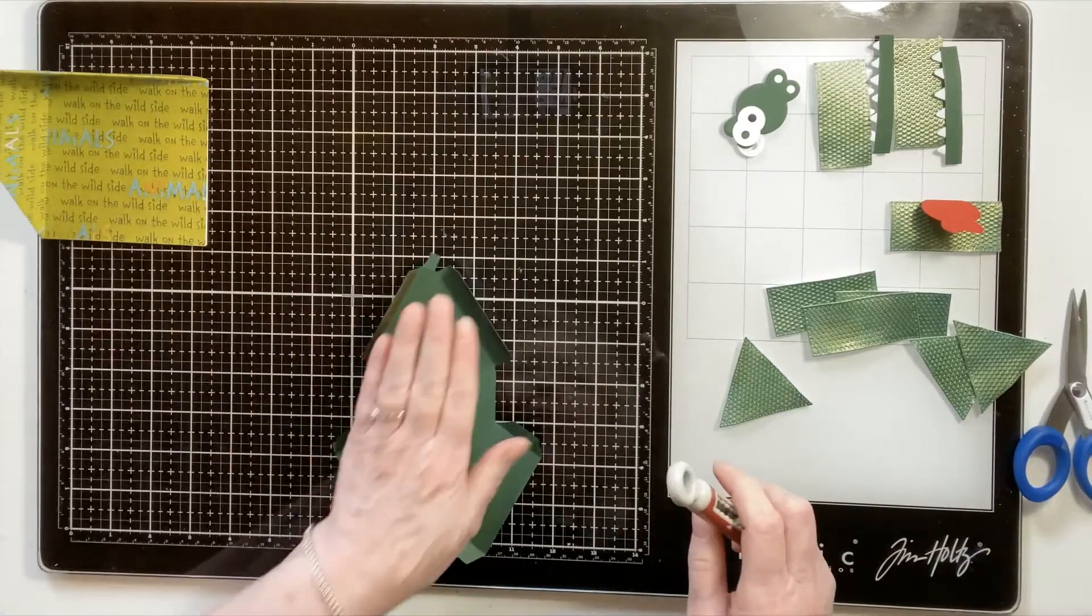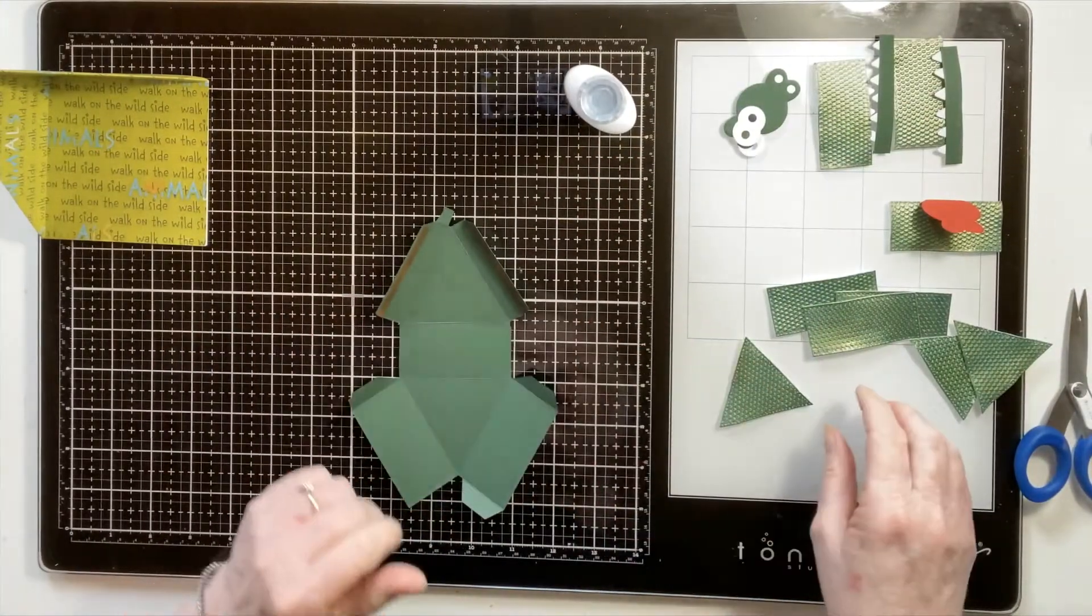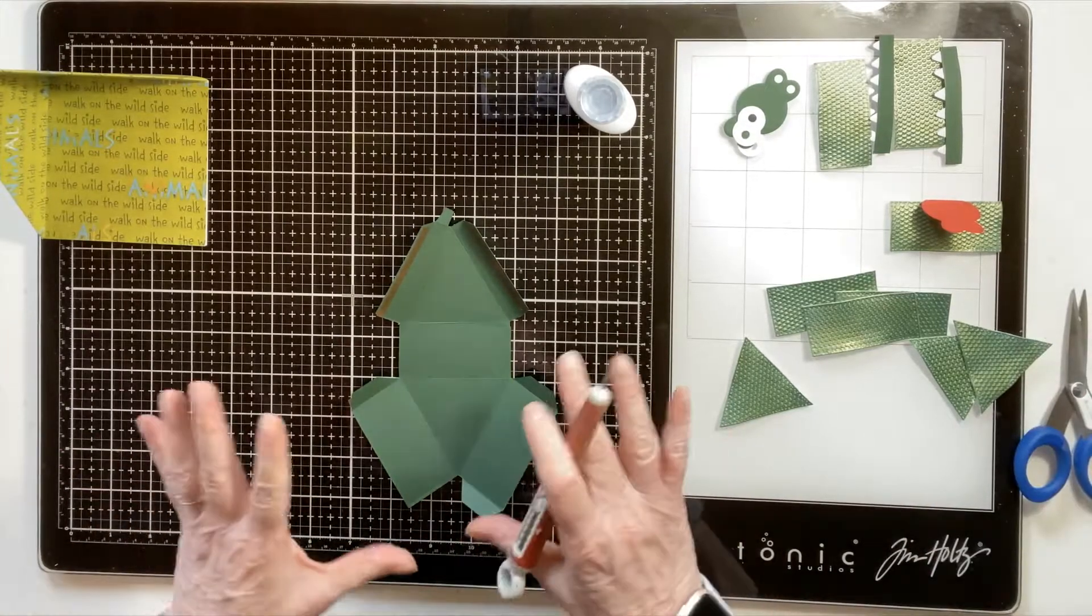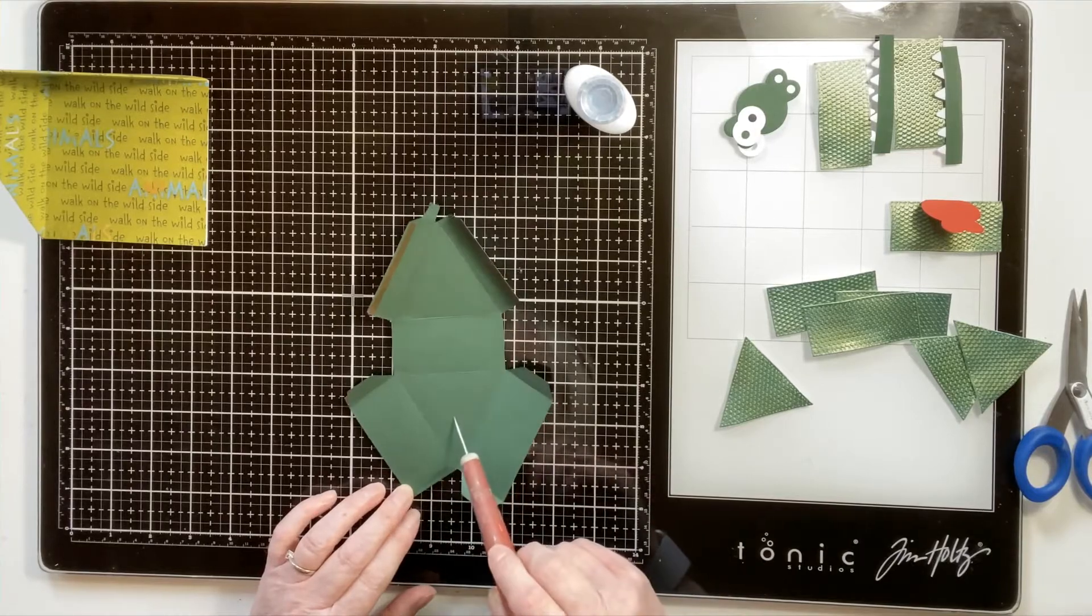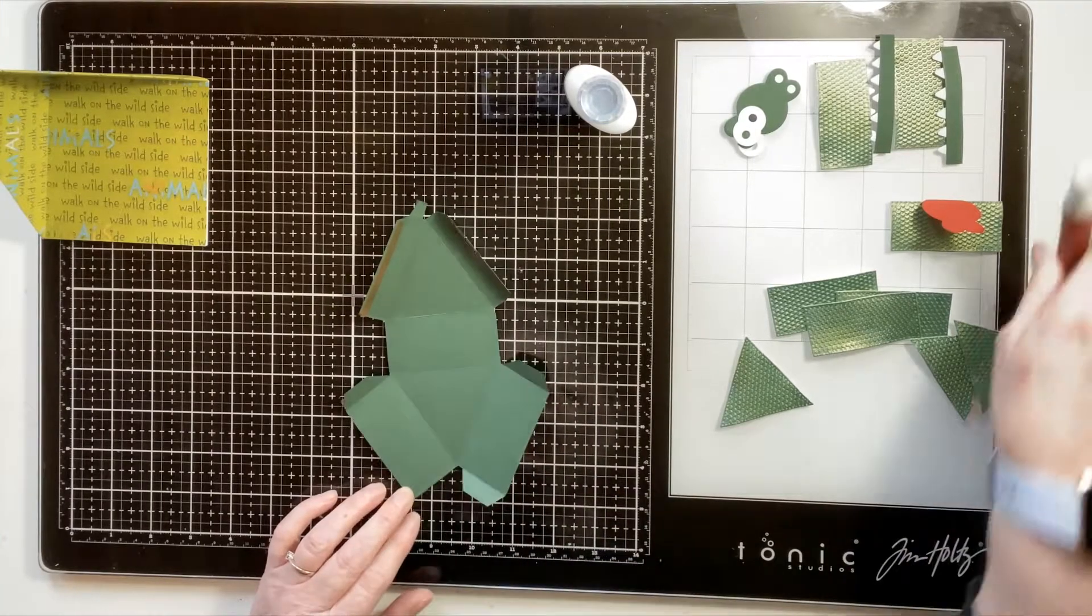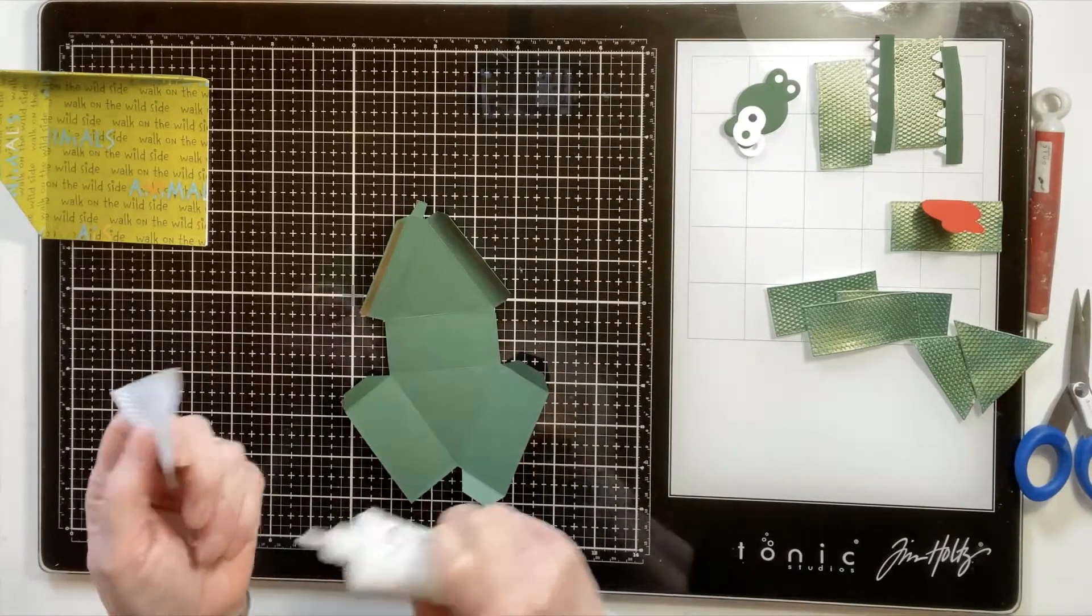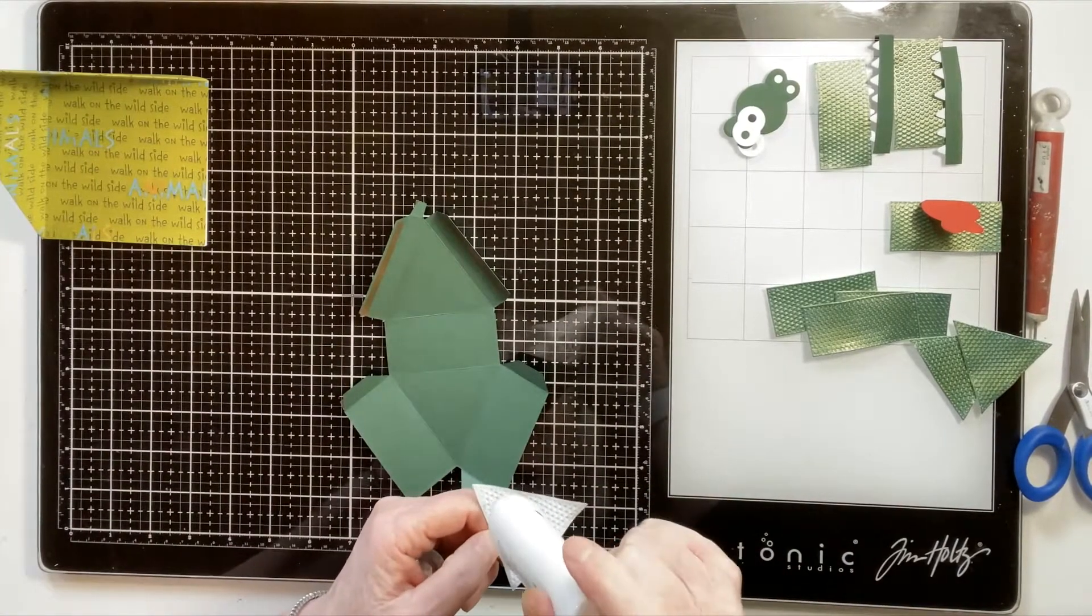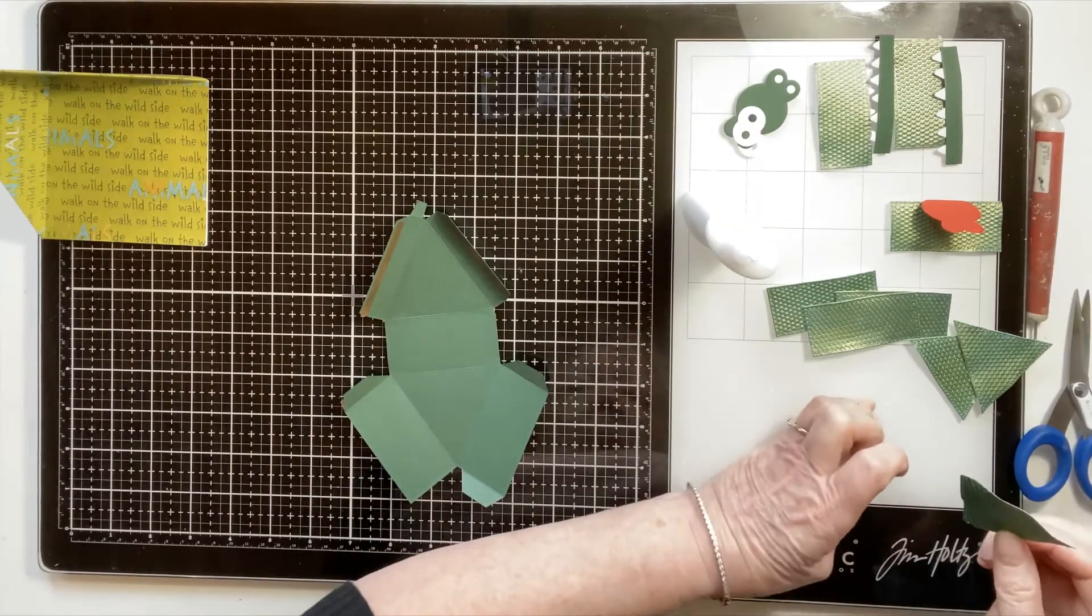Okay, so before we actually stick it together, we're going to decorate the inside as much as we possibly can. Some parts of it we can't, but we can do that piece, that piece, that piece and that piece. This is where the tongue will go so we can't actually do that yet. But if we get as much of this done as we possibly can, it'll make our life a bit easier. So let's go ahead and do that.